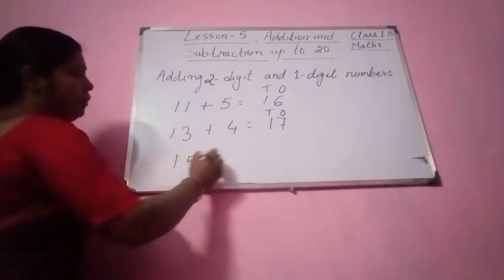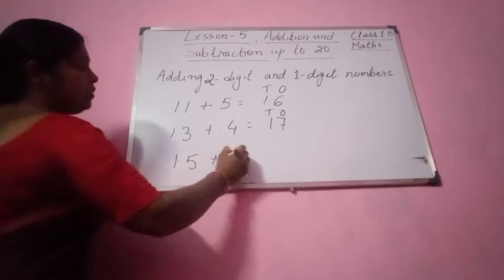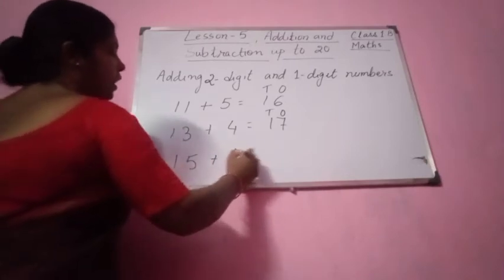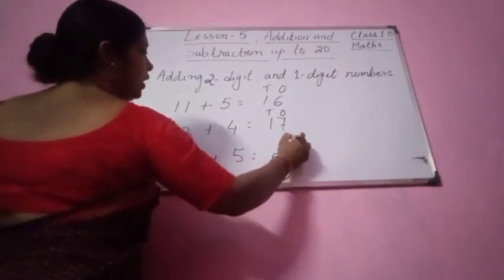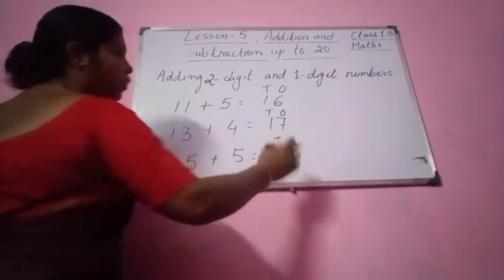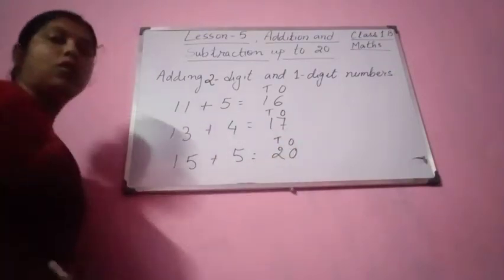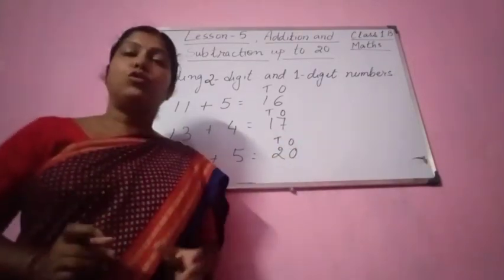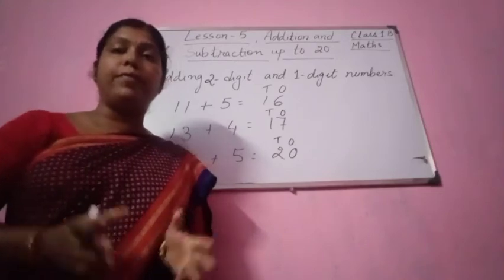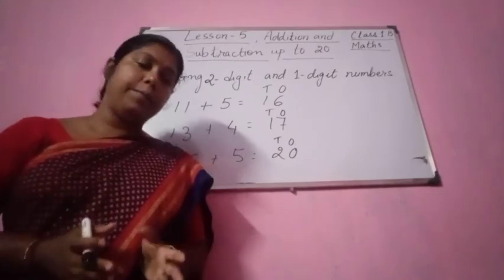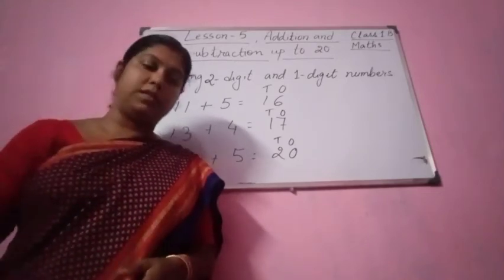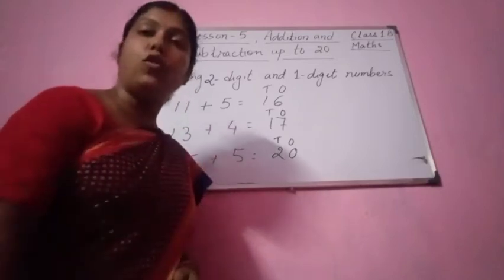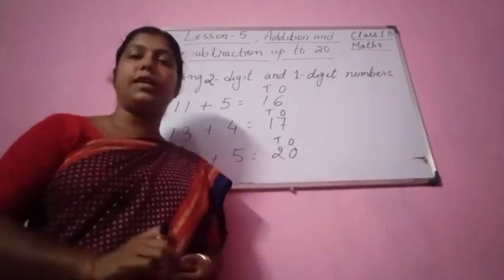Take another number: 15 plus 5 equal to 20. So here you write out: 2 tens equal to 20. So in this way we are adding 2 digit and 1 digit numbers. I hope this is also clear.